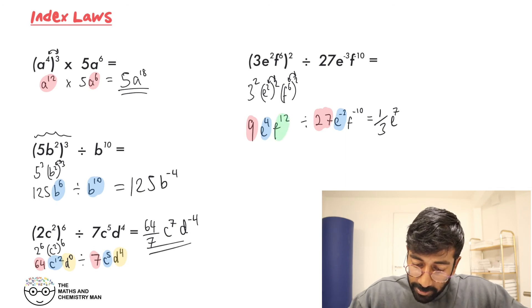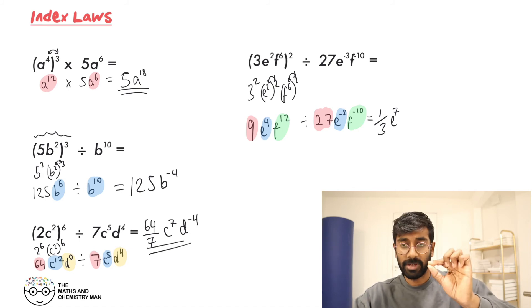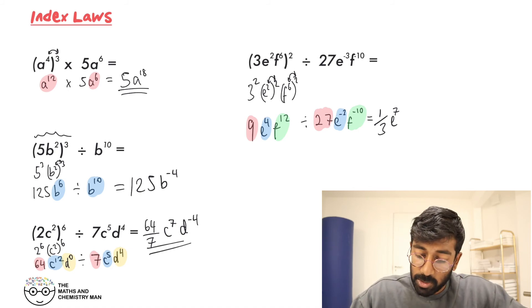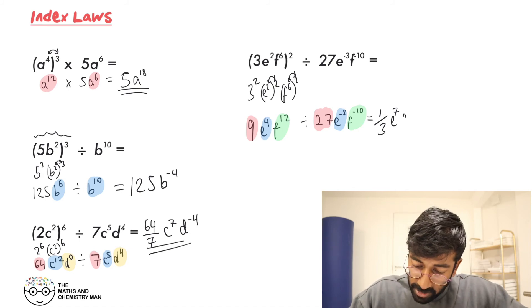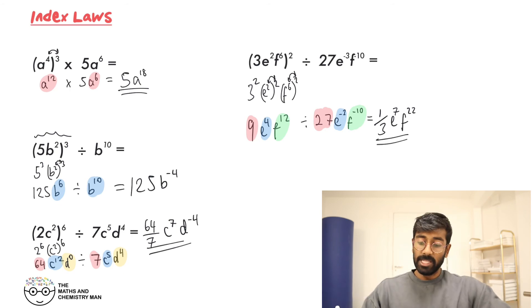Then the F's: F to the power of 12 divided by F to the power of minus 10. Again, be very careful with your signs — that's 12 plus 10 — so F to the power of 22. And there it is, all done.